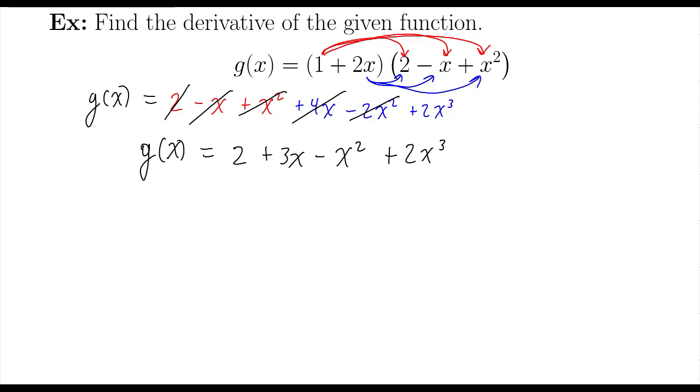So I have multiplied out g of x. Now it's just a matter of finding the derivative using the power rule. All right, first term. Derivative of a constant is 0.